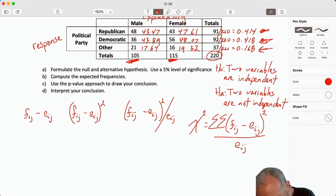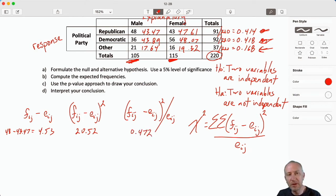Okay, so I will start. I'm right on the edge of my screen. 48 minus 43.47, so I'm starting on Republican and we'll go across each row. That gives me 4.53. I'm going to square that and divide by the expected value, and that gives me 0.472. Then we carry on. So now I'll go through the female. This is going to be 43 minus 47.61, minus 4.61. I square this and divide by that expected value, 0.446.